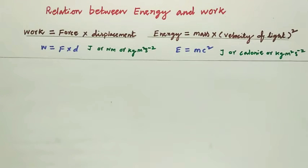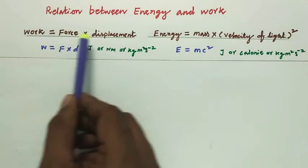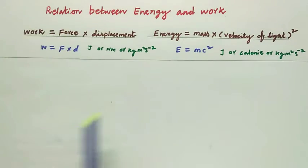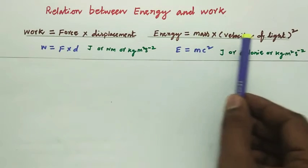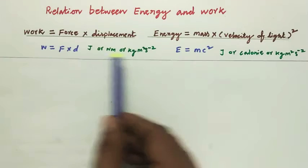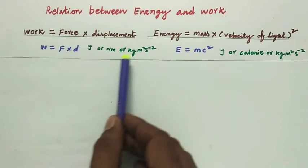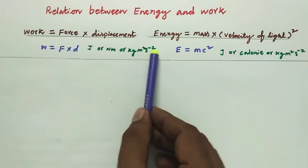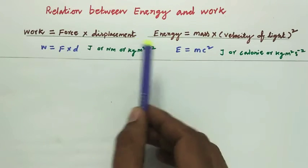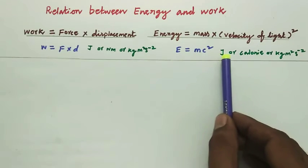Relation between energy and work. Work equals force into displacement. Energy equals mass into velocity of the light square. The unit for work is joule or Newton meter or kilogram meter square per second square. For unit for energy, joule or calorie or kilogram meter square per second square.